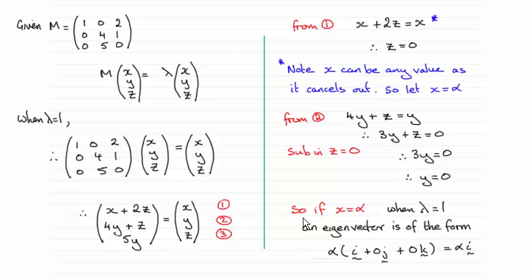So what we've got then, if x equals alpha when the eigenvalue is 1, we end up with an eigenvector of the form alpha i. OK?